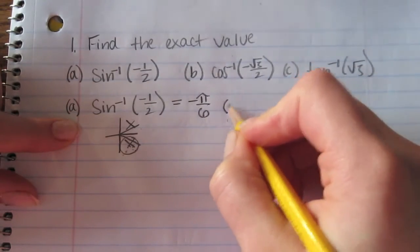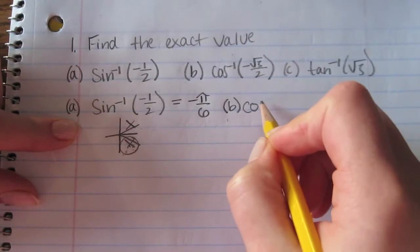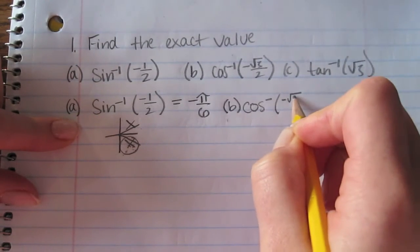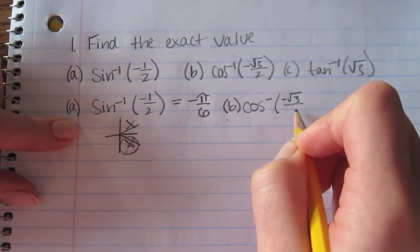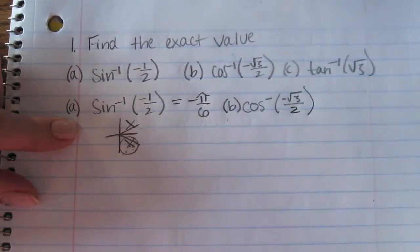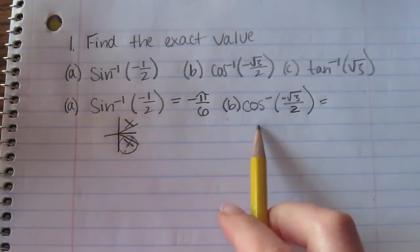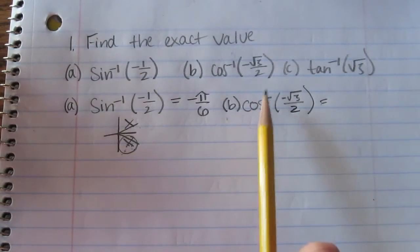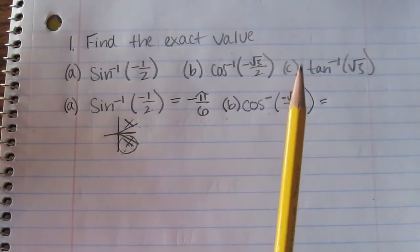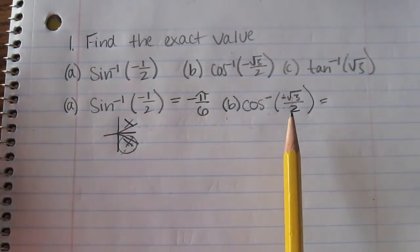Problem b is the inverse cosine of negative square root of 3 over 2. We know that the inverse cosine's domain is between negative 1 and 1, and that is between negative 1 and 1.